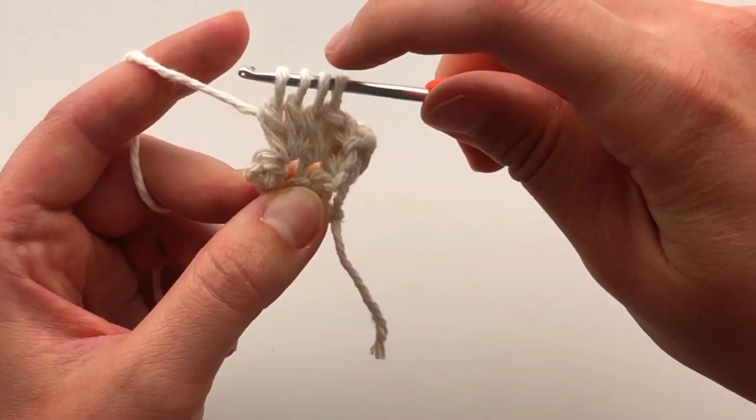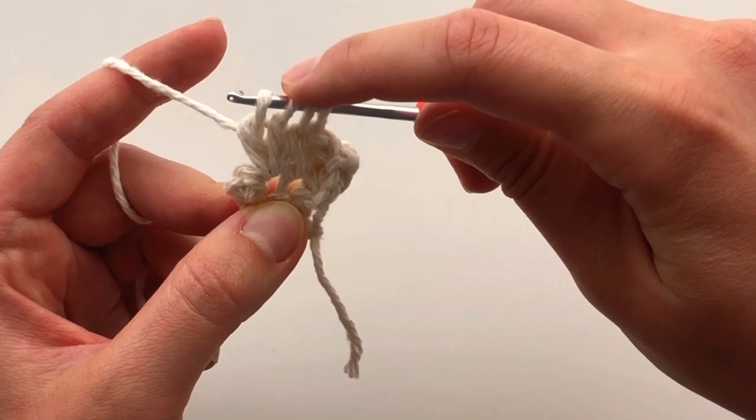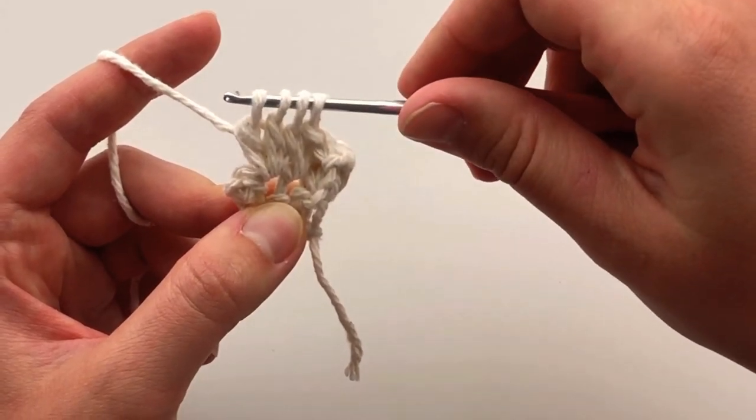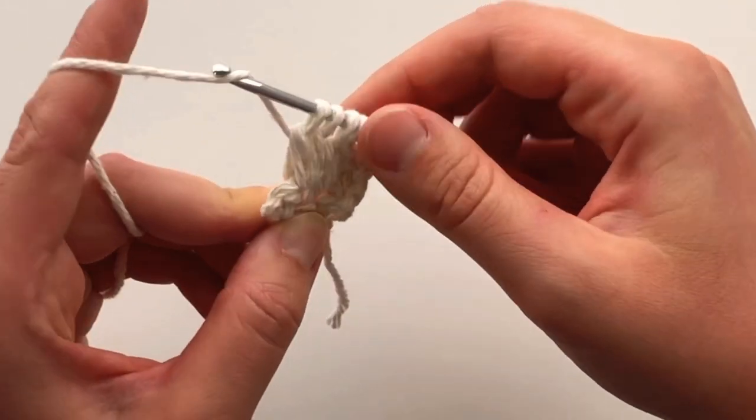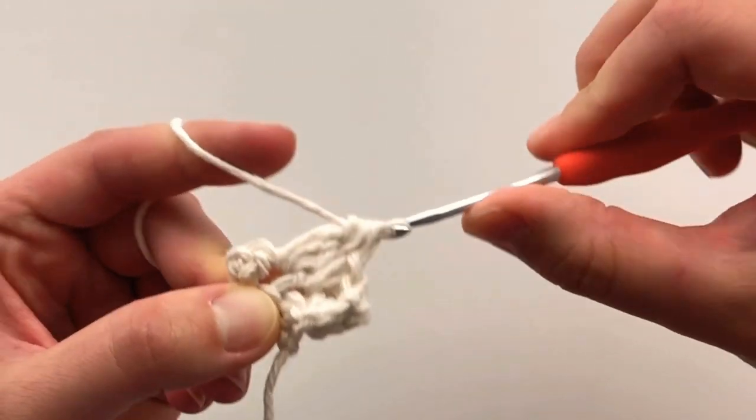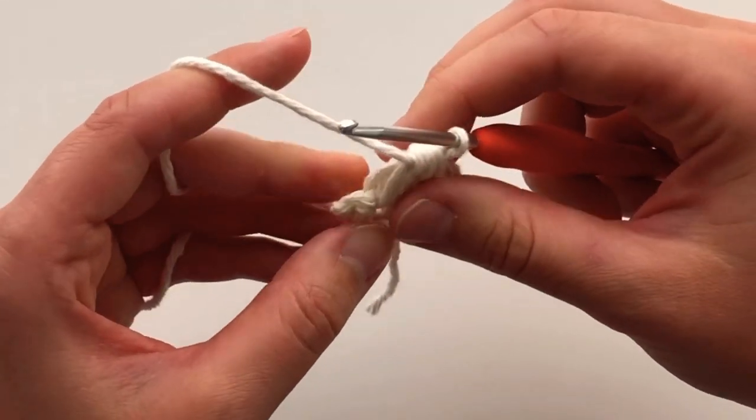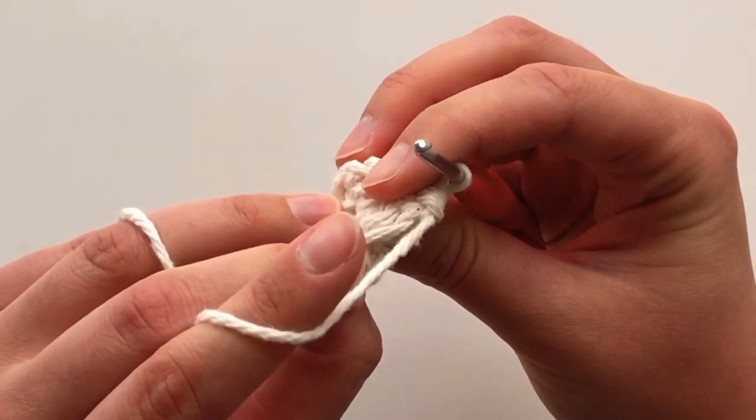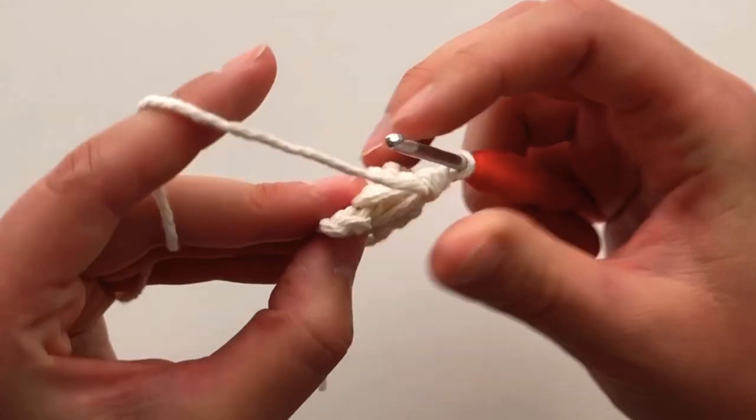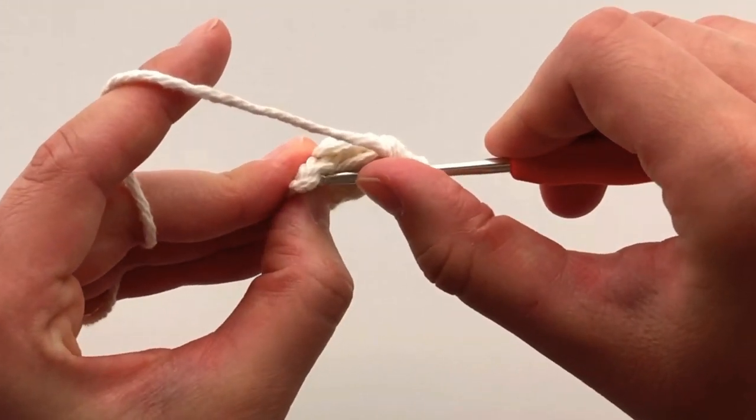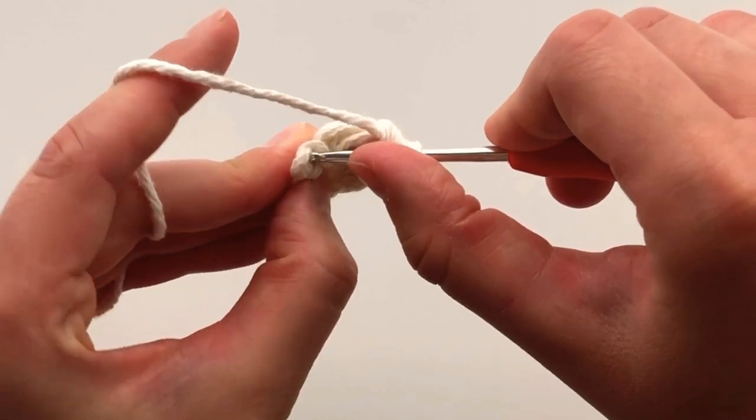And we are going to finish off the stitch by yarn over, and pull through all 4 loops. As you can see, we are at the end of the row, and we are going to single crochet into that last stitch.